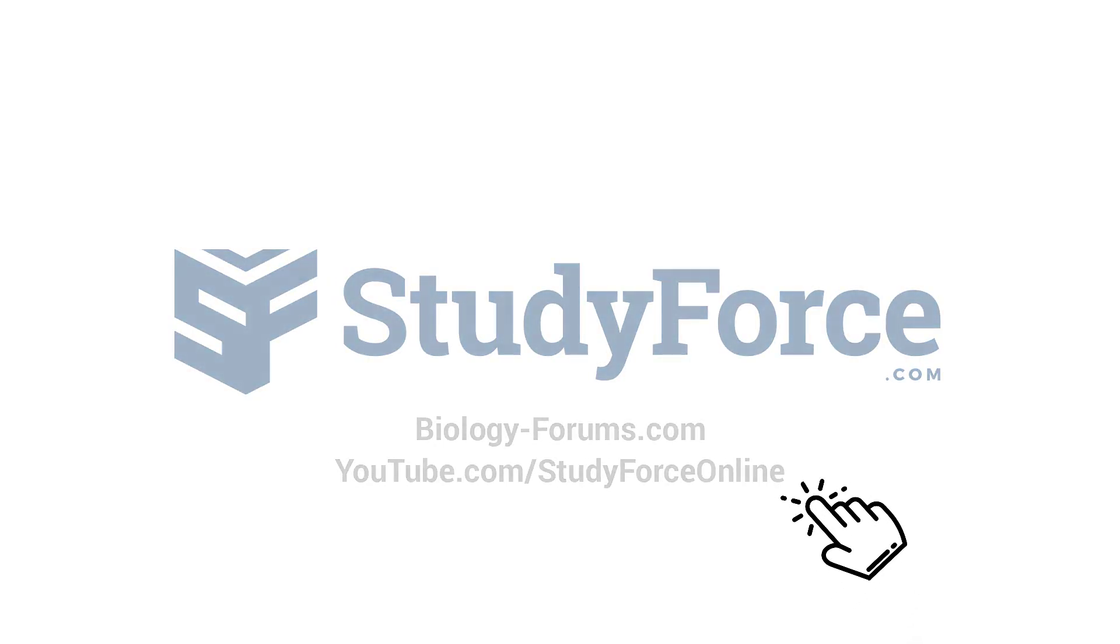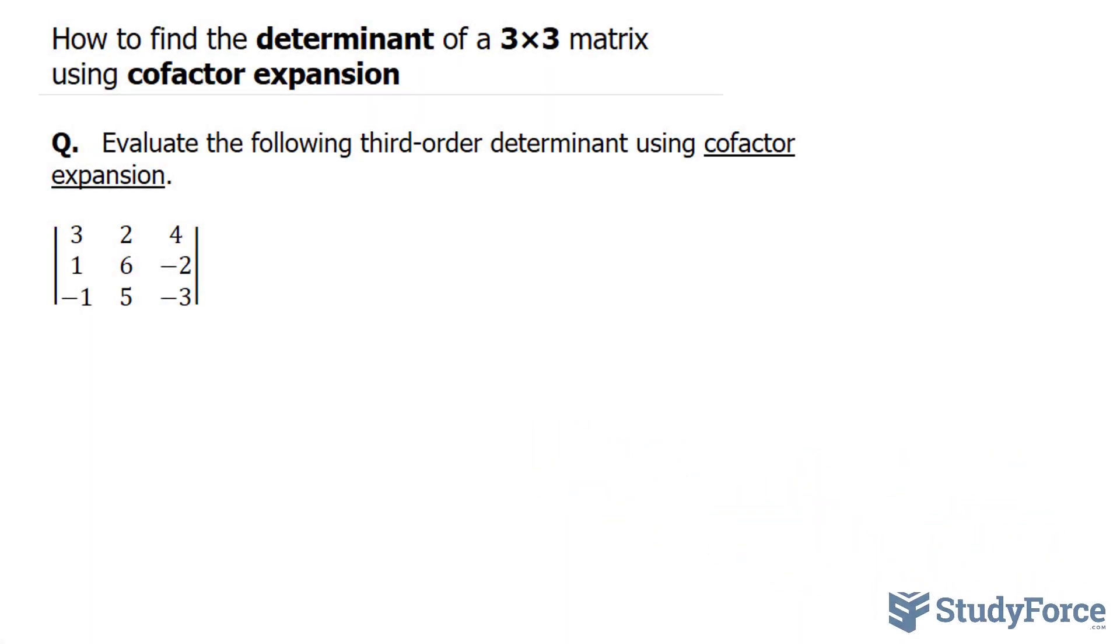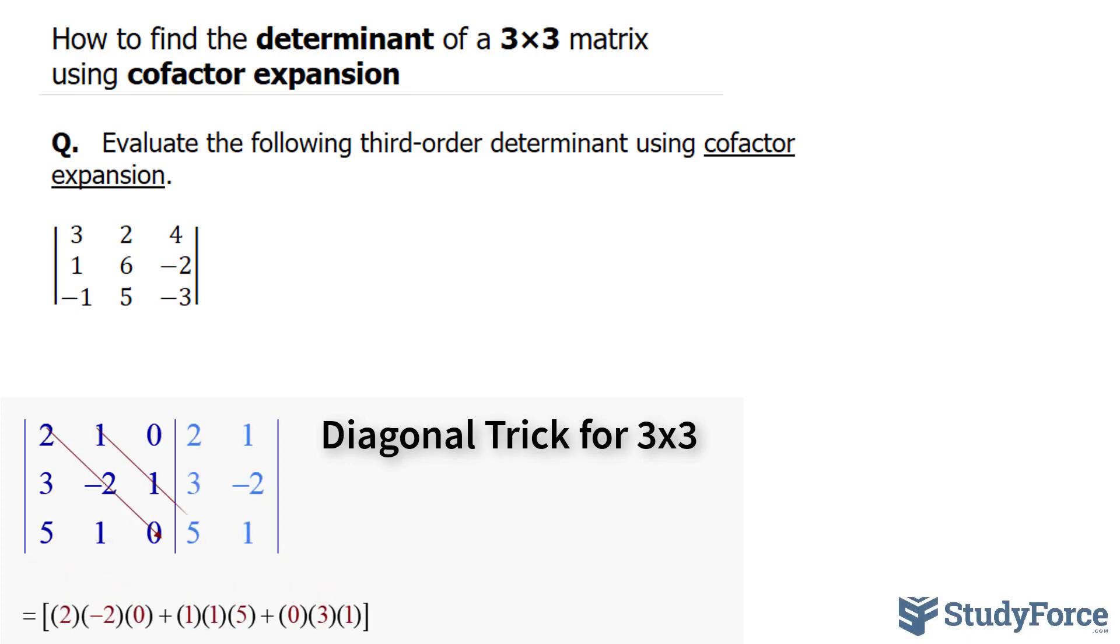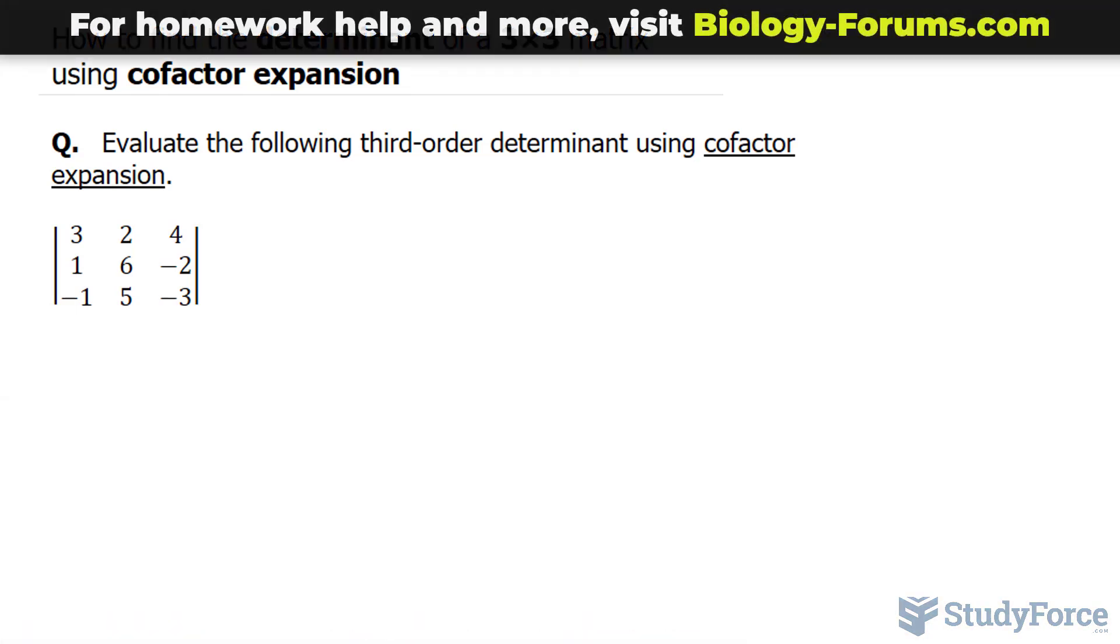In this lesson, I'll show you how to find the determinant of a 3x3 matrix using cofactor expansion. Keep in mind that we already know how to find the determinant of a 3x3 matrix. In fact, we learned a trick for 3x3 matrices, although it's not too reliable. It only works for 3x3 matrices. So this is where cofactor expansion becomes useful.